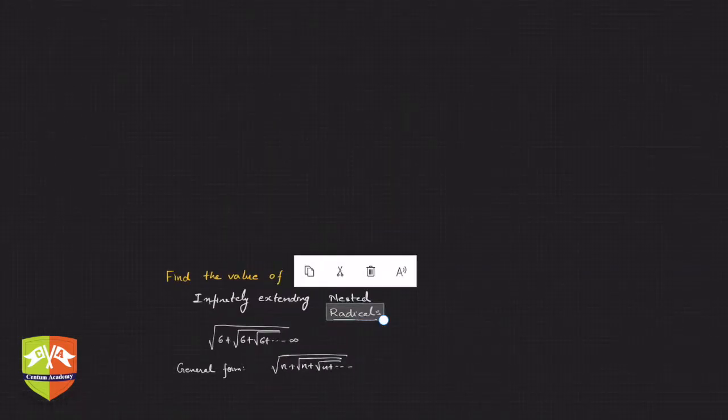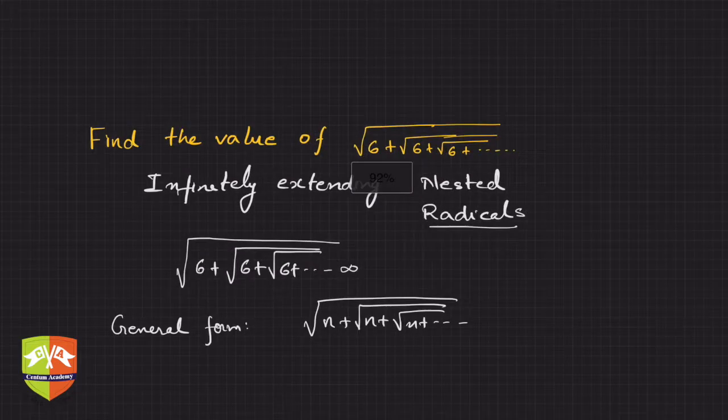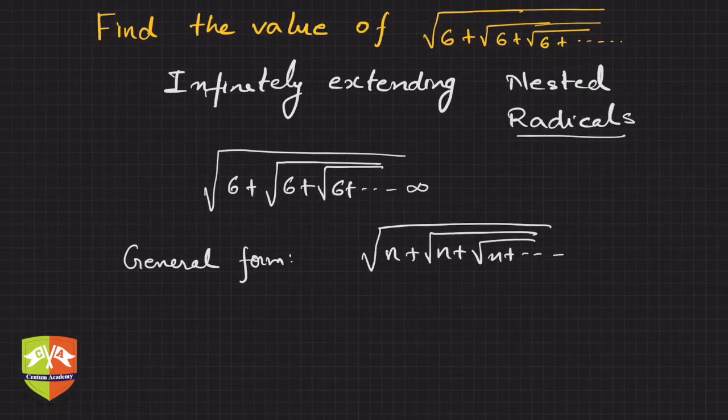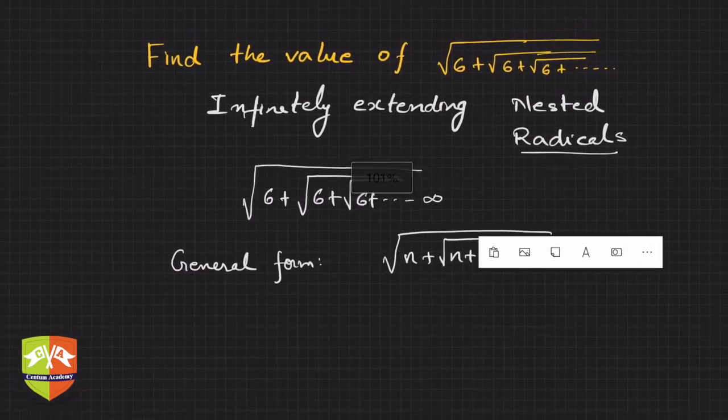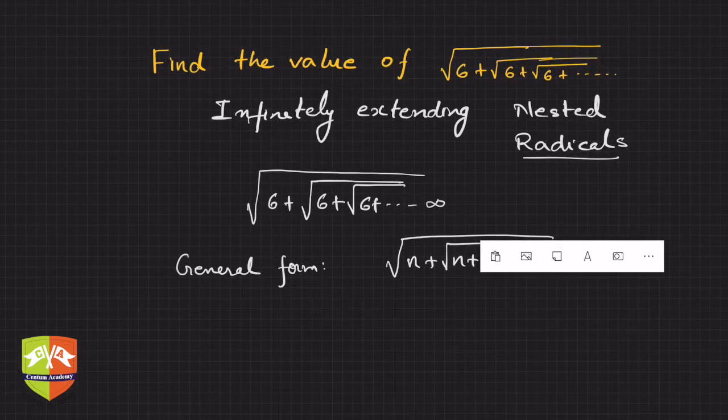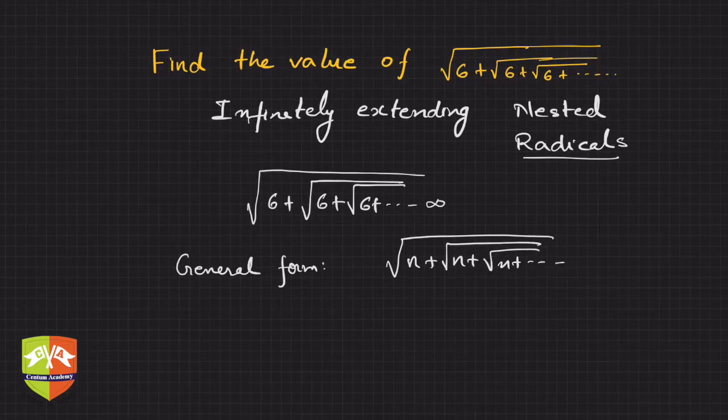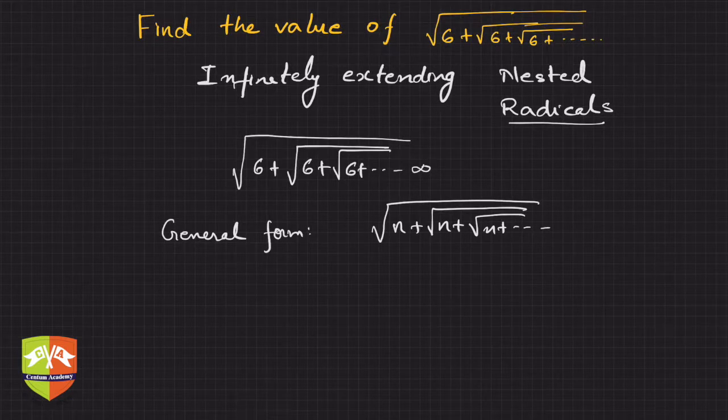That's surprising isn't it? So it looks like it's an irrational number but the value comes out to be rational. Let's check how quadratic equation knowledge is going to help us find the value.